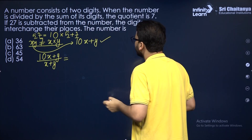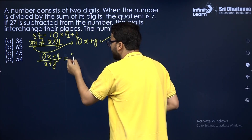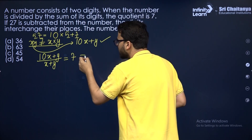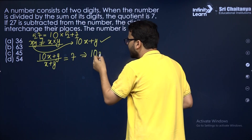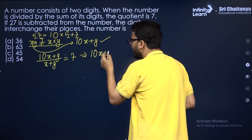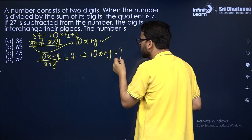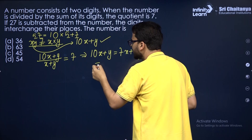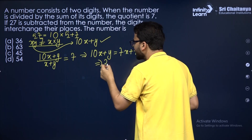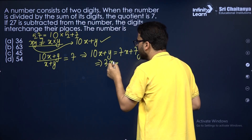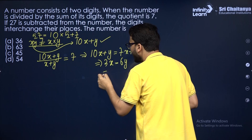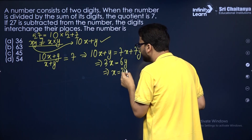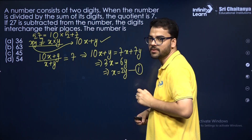From the first condition: 10x plus y equals 7x plus 7y, which gives 3x equals 6y, so x equals 2y. This is the first linear equation in two variables.